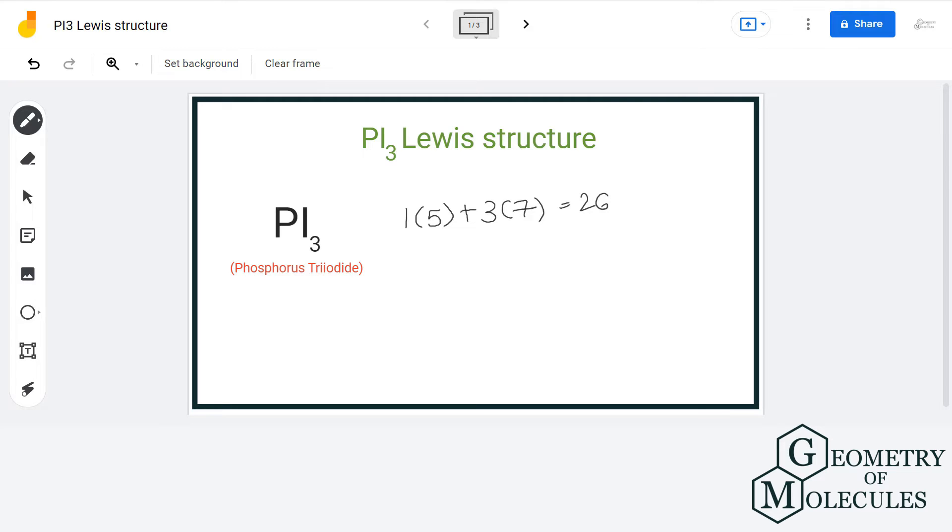Now for the arrangement of atoms, we will put Phosphorus in the center and arrange iodine atoms around it somewhat like this.